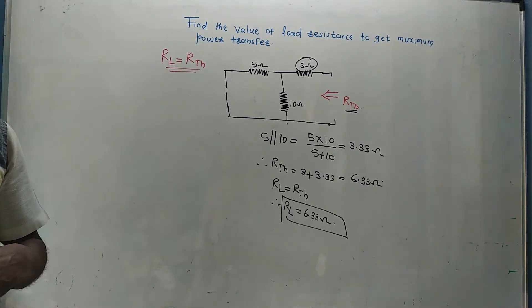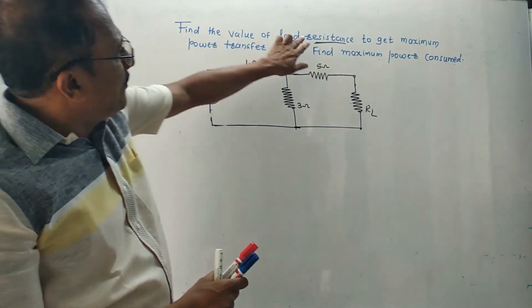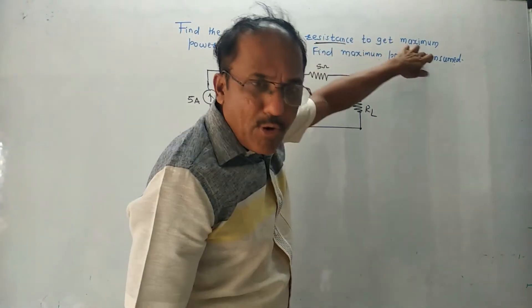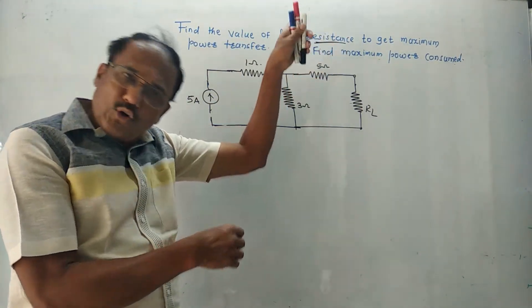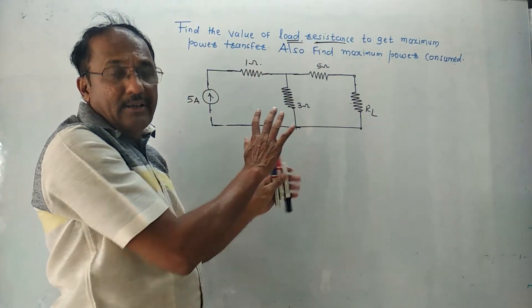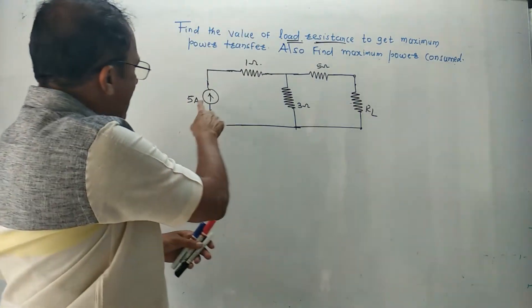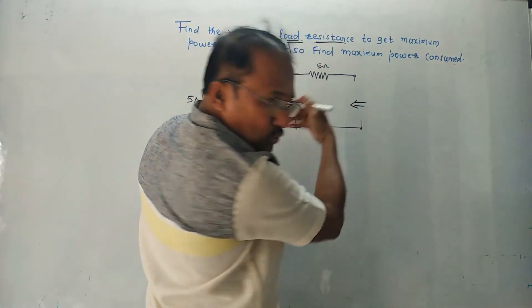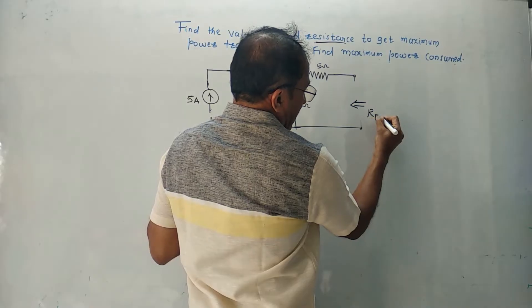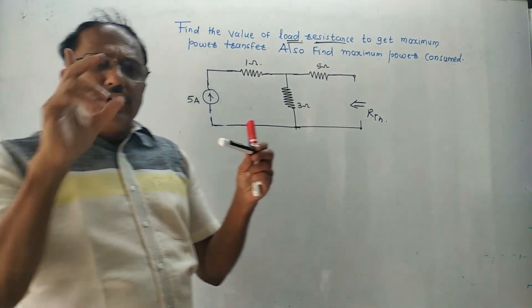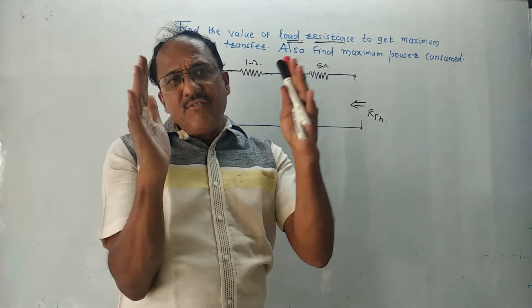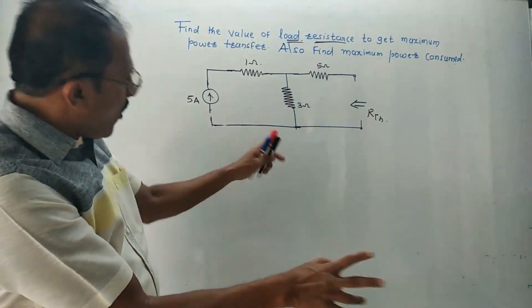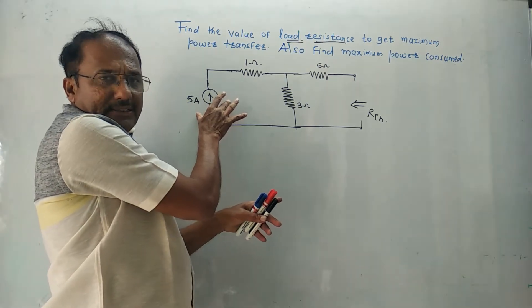Let us solve one more numerical. Find the value of load resistance RL to get maximum power transfer, and also find the maximum power consumed. The difference from the earlier problem is that here we have a current source instead of a voltage source. First step: remove RL. While calculating RTH, we follow the same two rules — remove RL, then check the circuit. If there is a voltage source, short-circuit it; if there is a current source, open-circuit it. Here there is a current source, so we open-circuit it, meaning simply remove the current source.